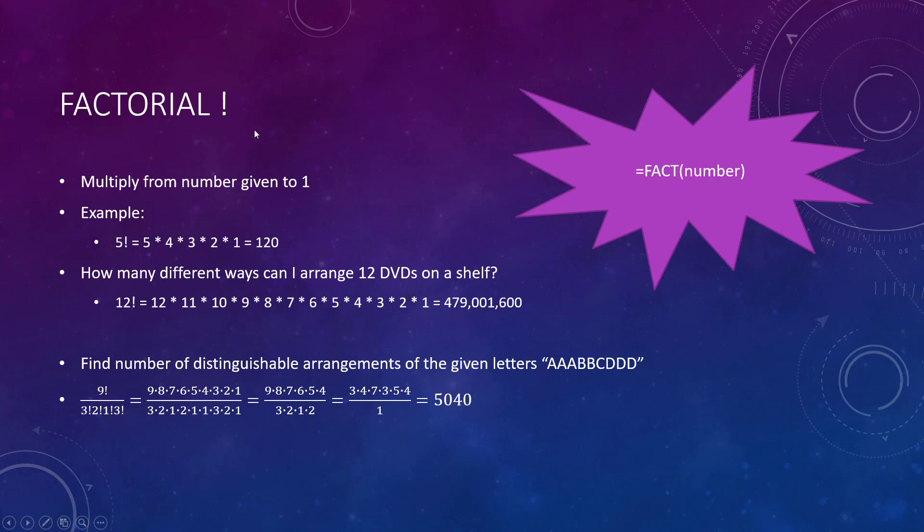A factorial with an exclamation doesn't mean it's yelling at you, it means that you are multiplying from the number they give you all the way down to one. We use this for how many different ways could I arrange so many items. If you have 12 DVDs, the first DVD can go, the second one you got 11 choices, 10 and so on. Just a very quick way to multiply numbers from the start all the way to one.